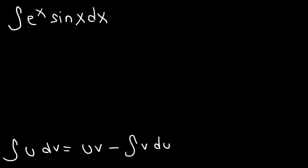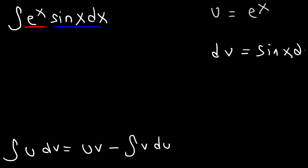We're going to set u equal to e to the x, and then dv equal to sin x dx. Now du, the derivative of e to the x, is going to be e to the x times dx. And v, the integral of sine, is negative cosine.